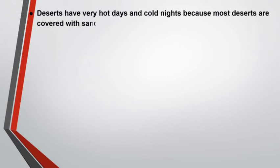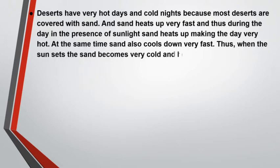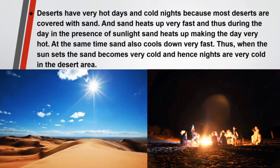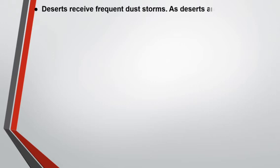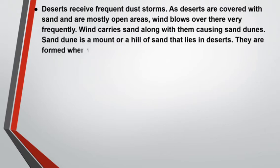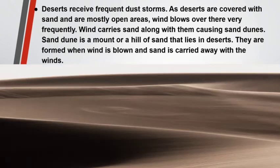Some features of deserts are: deserts have very hot days and cold nights. Because most deserts are covered with sand, and sand heats up very fast, during the day in the presence of sunlight, sand heats up making the day very hot. At the same time, sand also cools down very fast, so when the sun sets, the sand becomes very cold and nights are very cold in the desert. Deserts receive frequent dust storms. As deserts are covered with sand and are mostly open areas, wind blows very frequently, carrying sand along and causing sand dunes. Sand dunes are a mound or hill of sand that lies in deserts, formed when wind blows and carries sand away.